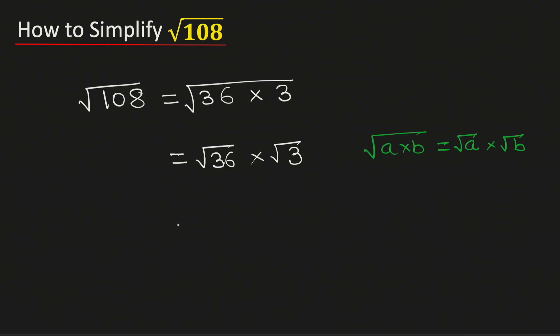Now we know that square root of 36 is equal to 6, and root 3 cannot be simplified further. Multiplying we get 6 root 3. Therefore, square root of 108 in its simplified radical form is equal to 6 root 3. And this is our final answer.